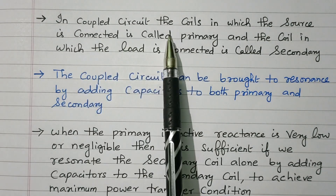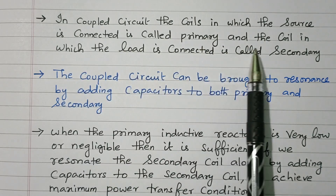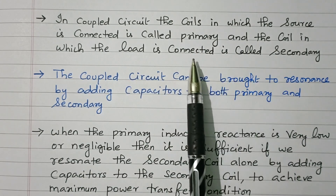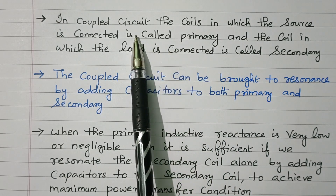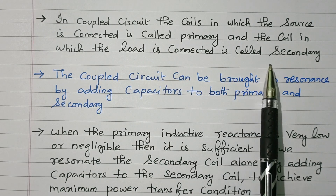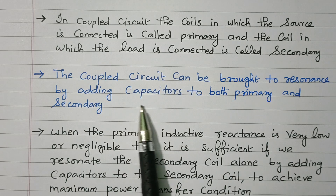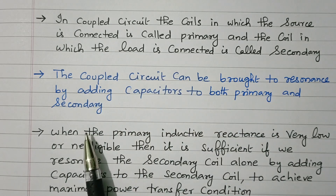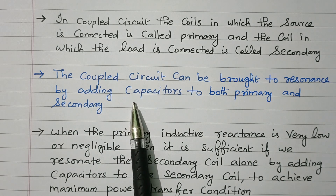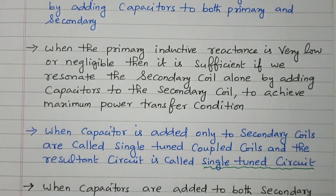In a coupled circuit, the coil in which the source is connected is called primary, and the coil in which the load is connected is called secondary. The coupled circuit can be brought to resonance by adding capacitors to both the primary and secondary coils.